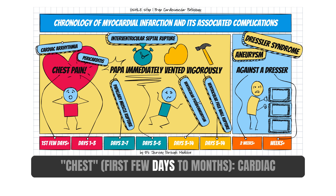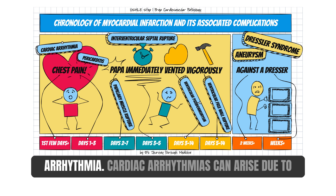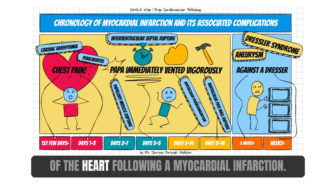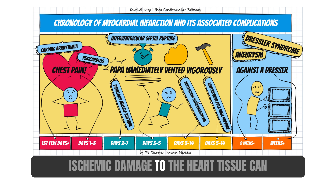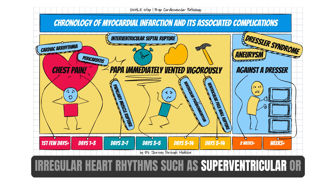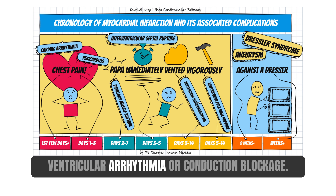Chest — first few days to months — cardiac arrhythmia. Cardiac arrhythmias can arise due to the disruption of the electrical conduction system of the heart following a myocardial infarction. Ischemic damage to the heart tissue can create areas of altered conductivity, leading to irregular heart rhythms such as supraventricular or ventricular arrhythmia, or conduction blockage.